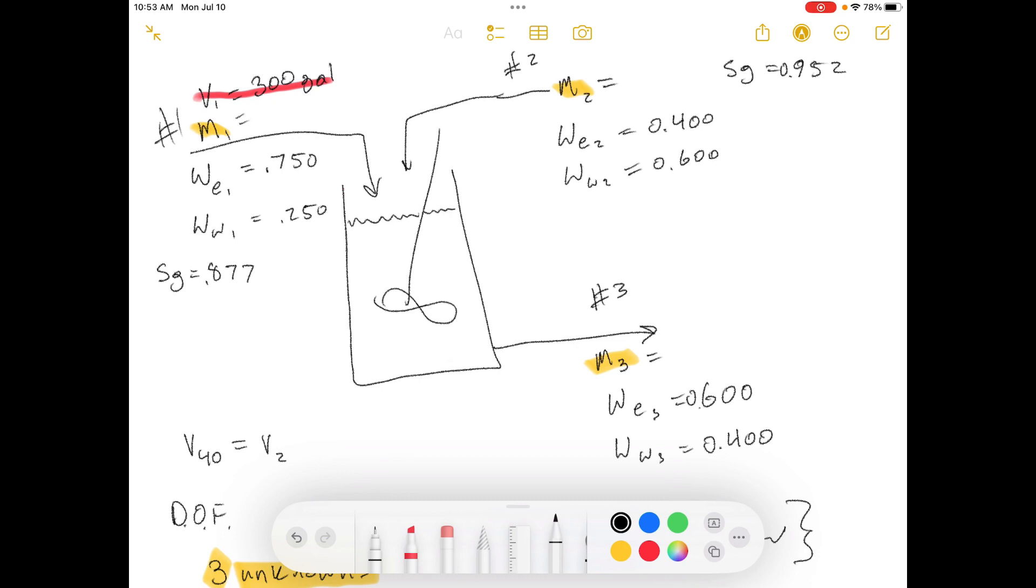The problem statement says 300 gallons of a mixture containing 75 weight percent ethanol and 25 percent water, mixture specific gravity equals 0.877, and a quantity of 40 weight percent ethanol, 60 percent water mixture, specific gravity equals 0.952, are blended to produce a mixture containing 68 percent ethanol.